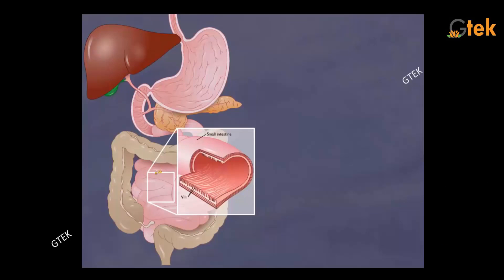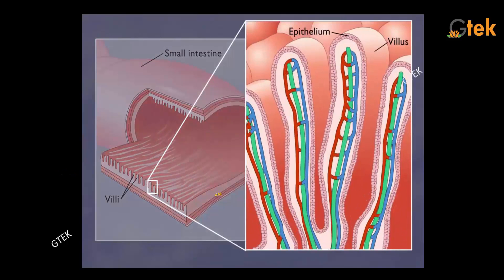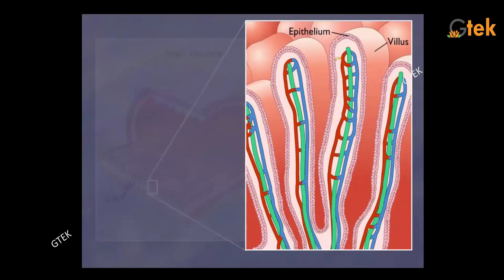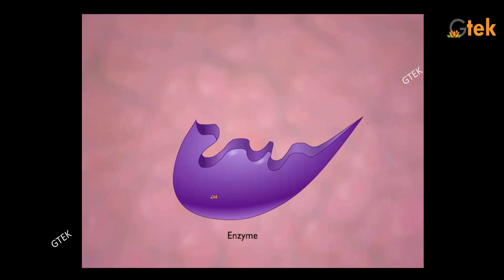I am trying to show the small intestine of a human. Here is the cross section of the small intestine with villi containing epithelium tissues. In the micro villi, there are enzymes. I'm showing you how ester hydrolysis is happening.